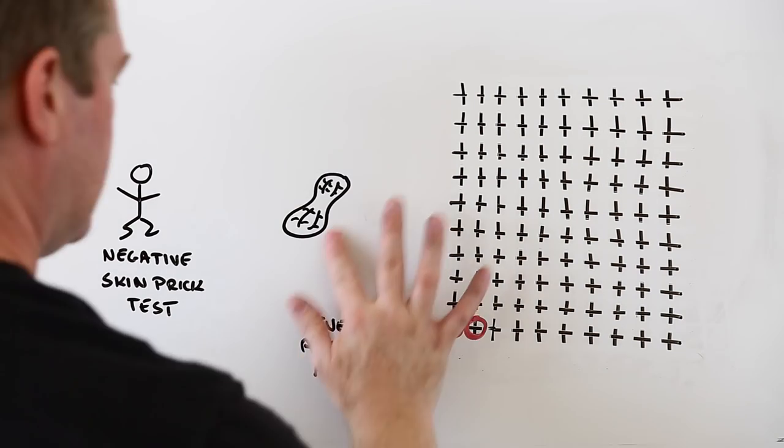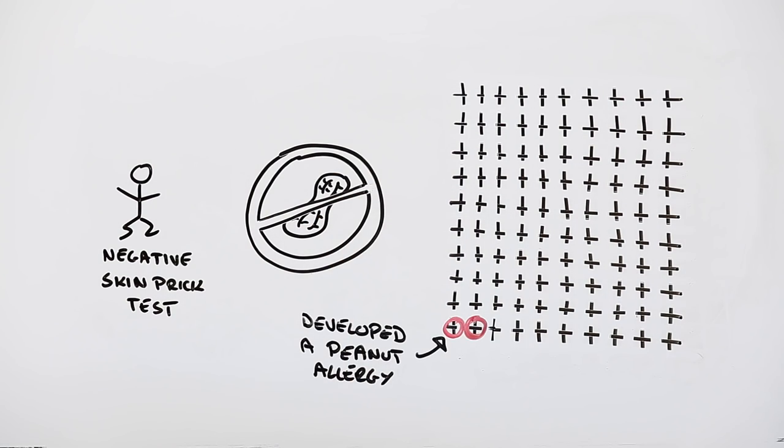That may sound high, but compare it to those that weren't exposed to peanut products. In this group, 14 kids out of every 100 developed an allergy. In other words, kids that were not exposed to peanuts were seven times more likely to develop a peanut allergy than those that were.